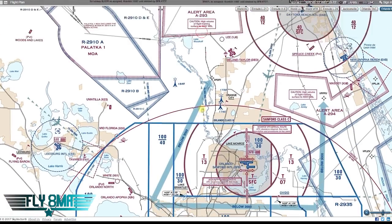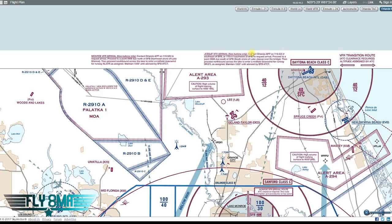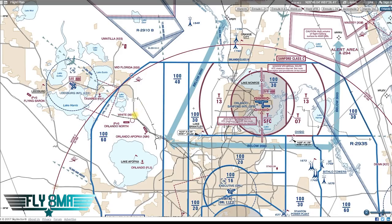We want to fly the Jessup arrival route, so we contact Orlando approach. The frequency is 119.52 if southeast of Sanford, or 119.4 if southwest. In our case we're southwest of Sanford, so we call 119.4. We'll then proceed to a point five nautical miles due south of Sanford, comply with their instructions, and maintain 1,500 feet until advised by Sanford Air Traffic Control Tower.